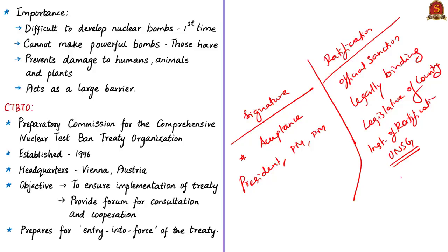Ratification may also require adjustment of a country's legislation to reflect its commitments. CTBT is important because it makes it very difficult for countries to develop nuclear bombs for the first time, and for countries that already have nuclear bombs, it makes it more difficult to build more powerful ones. It also prevents the huge damage caused by radioactivity from nuclear explosions to human beings, animals, and plants, thus acting as a last barrier against developing nuclear weapons.